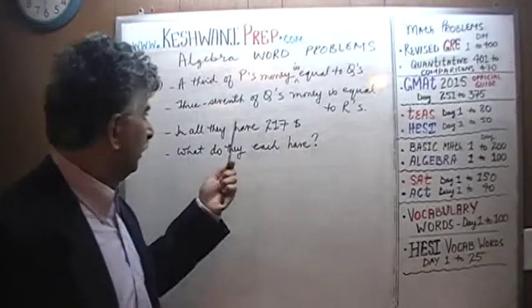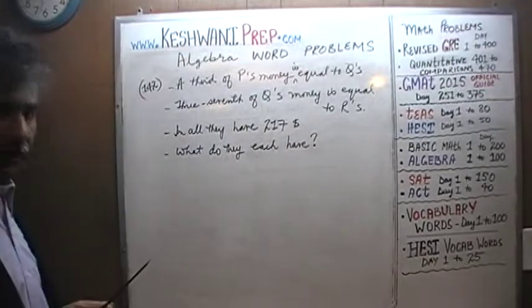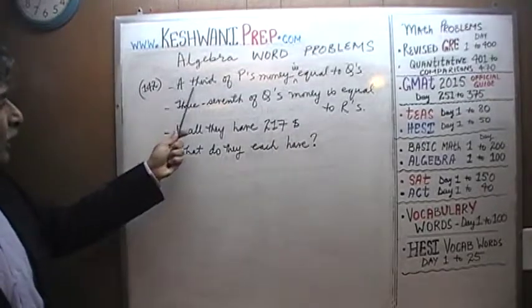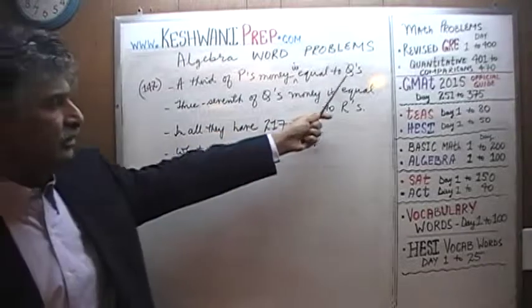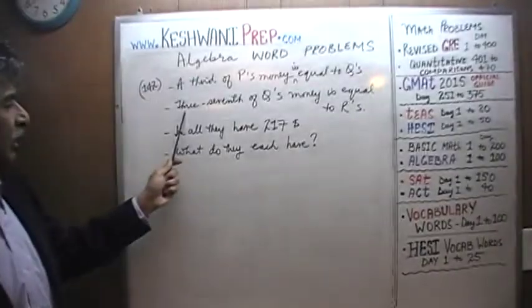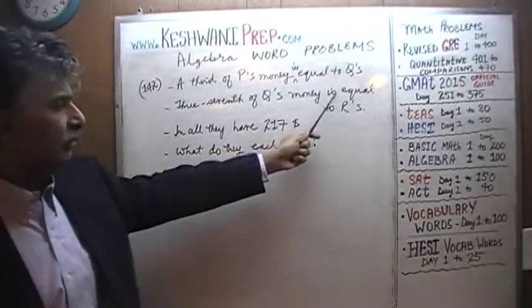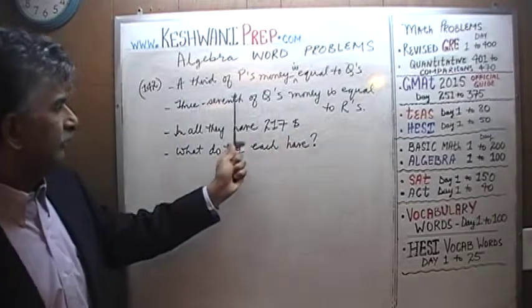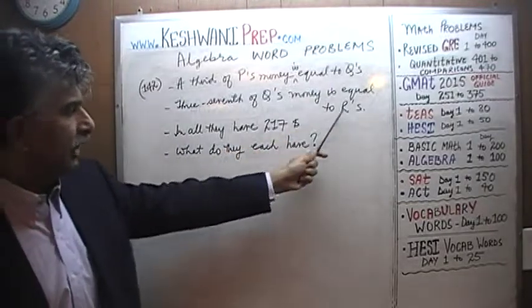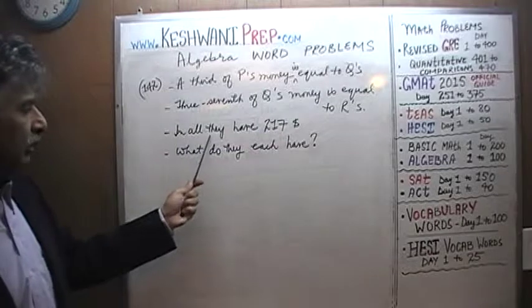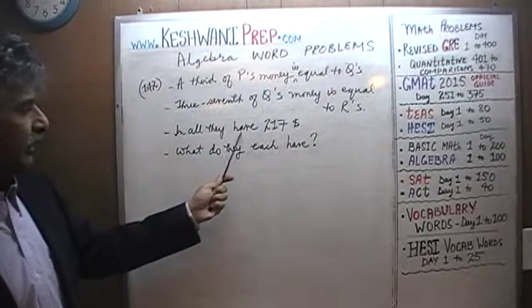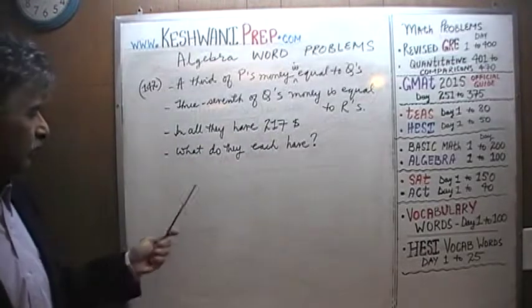The problem is already on the blackboard. Let's take a look. We are told that a third of P's money is equal to Q's. We are further told 3/7 of Q's money is equal to R's.